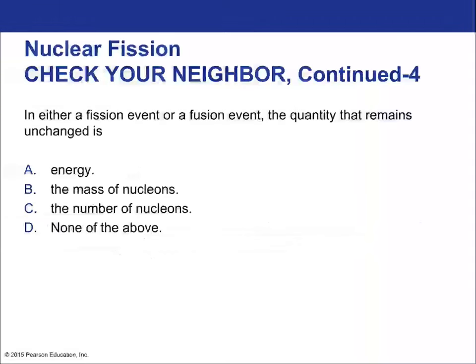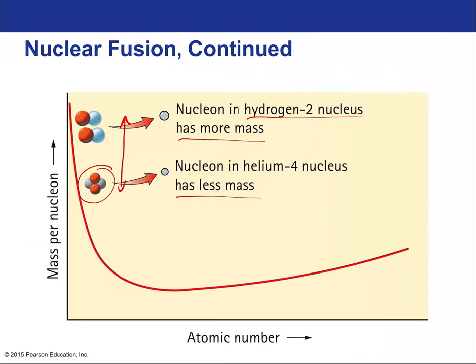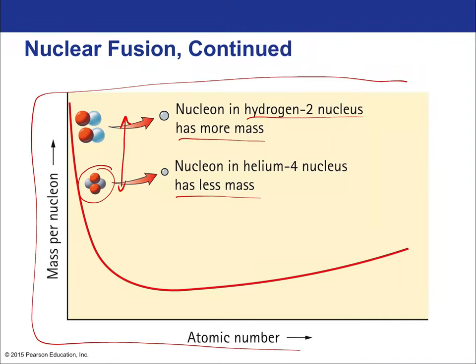To summarize, this lecture introduced nuclear fission and fusion, and the crucial idea that mass per nucleon does not remain constant — it depends on where we are in the periodic table. The binding-energy-valley figure is essential for understanding both processes: the universe can produce nuclear power from very light elements through fusion and from very heavy elements through fission, but not from elements near the middle, particularly not from iron. Thank you for watching.